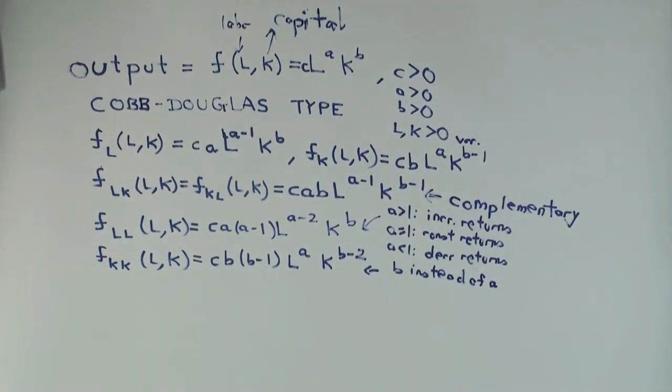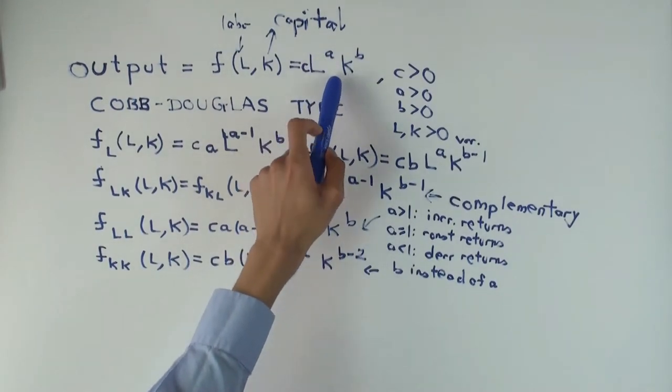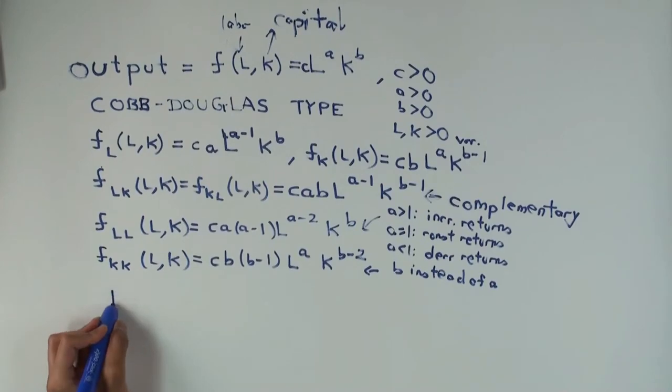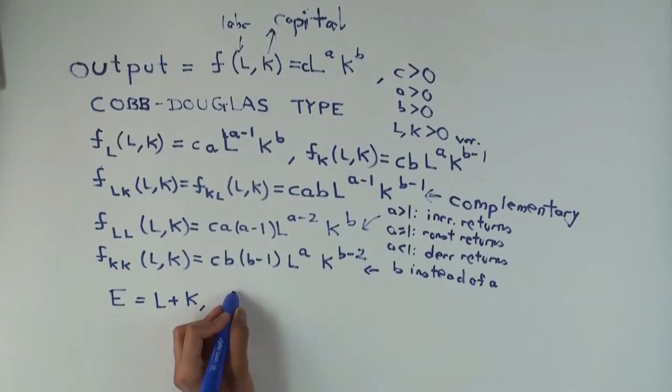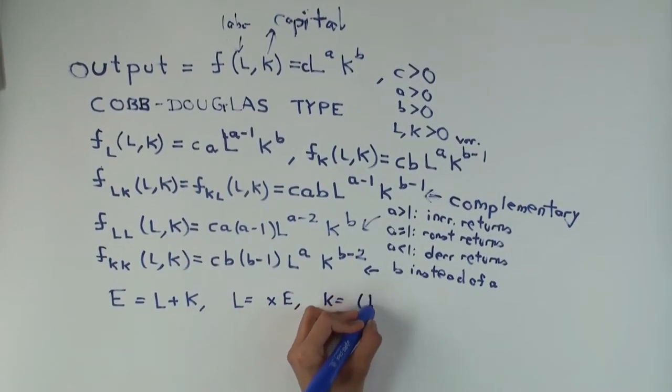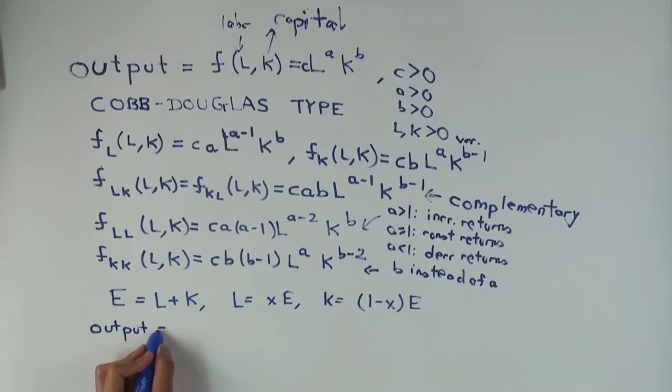So you see that in order to get increasing returns on labor, you really need the exponent on labor to be greater than one. If you want to get increasing returns on capital, you want the exponent on capital to be greater than one. However, what happens if you consider combined returns? What is the combined return? Well, suppose my total expenditure is L plus K equals E. And now I fix L as a fixed fraction of E, and K as the remaining. So as the factory owner, I've decided that I'm always going to spend on labor and capital in this ratio x to 1 minus x. Now in that case, what's the output as a function of E?